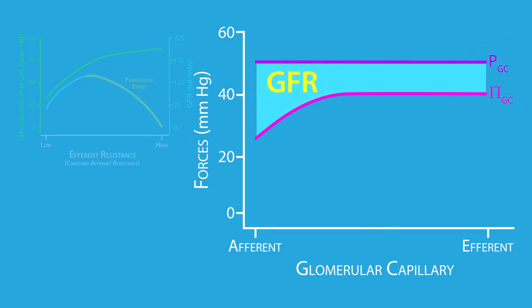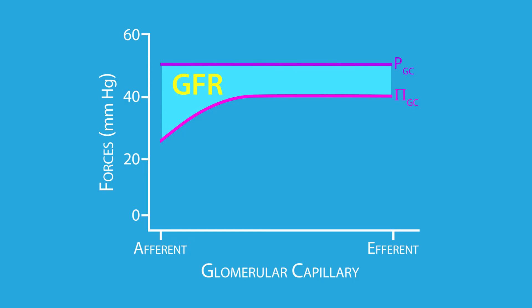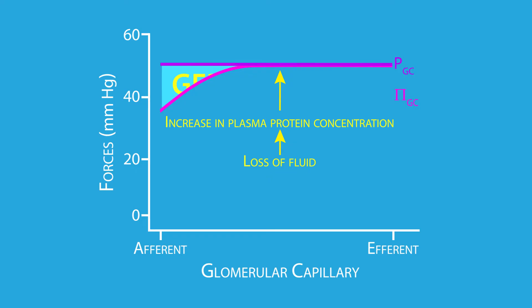Increases in efferent resistance lead to increased glomerular capillary hydrostatic pressure, which would lead to an increase in GFR. However, at mid to high efferent resistance, it results in decreased GFR, which can only be explained by an increase in glomerular capillary colloid osmotic pressure. The increases in colloid osmotic pressure are due to increases in plasma proteins, which are due to an increase in the loss of fluid during filtration. This increased loss of fluid is primarily due to the reduction in renal plasma flow.